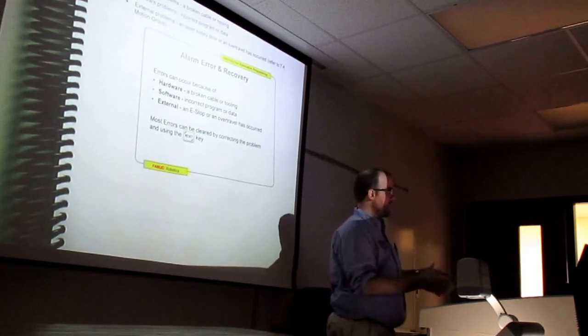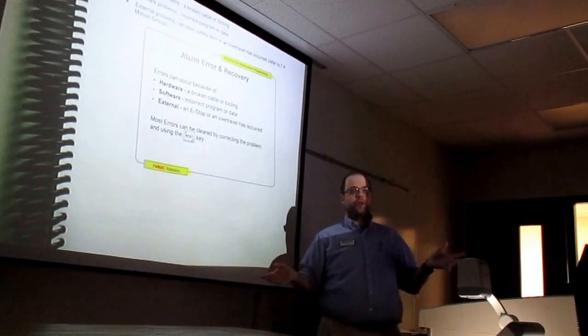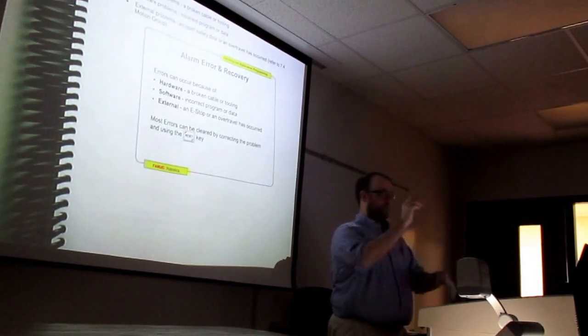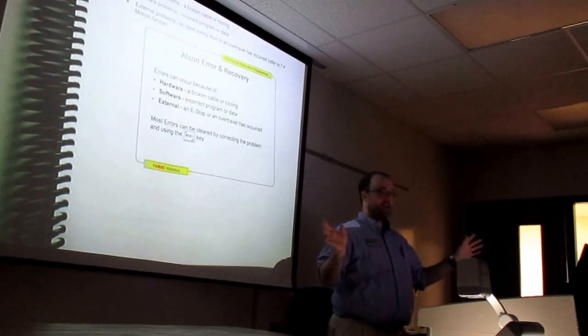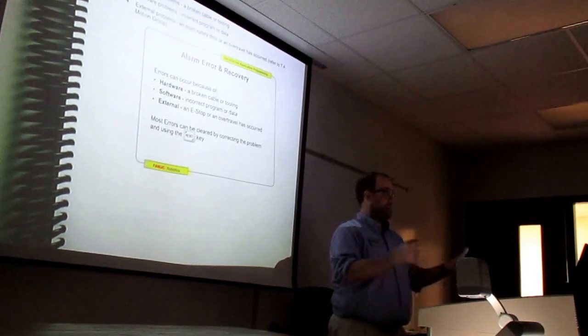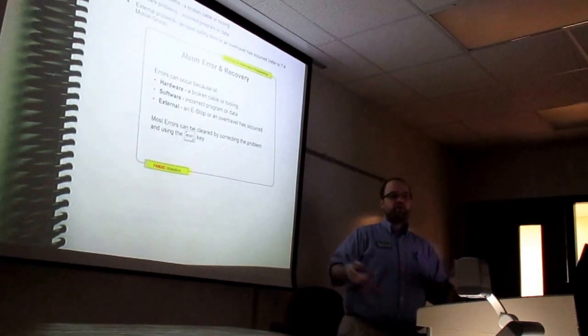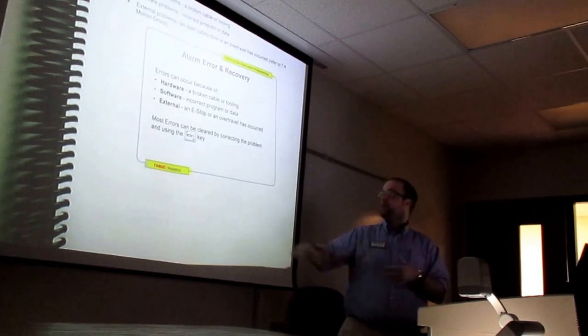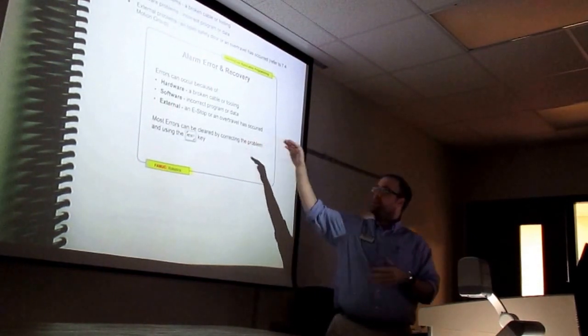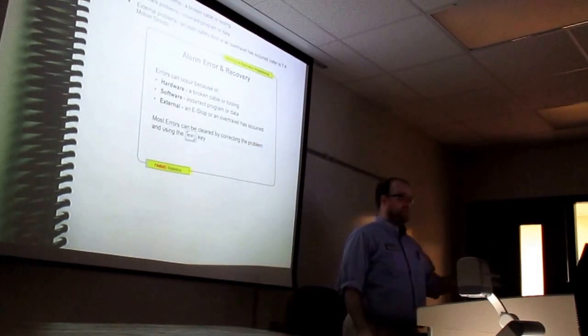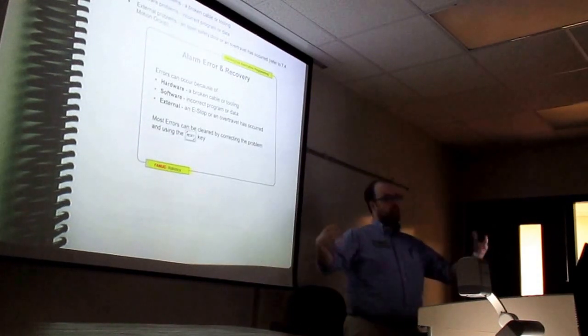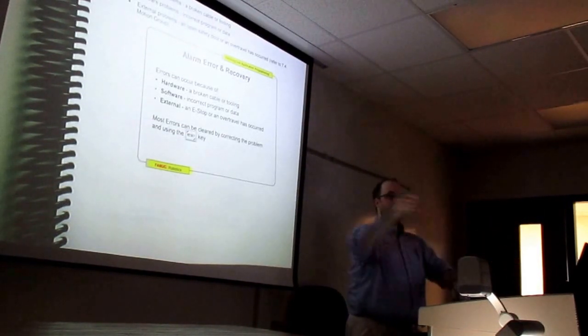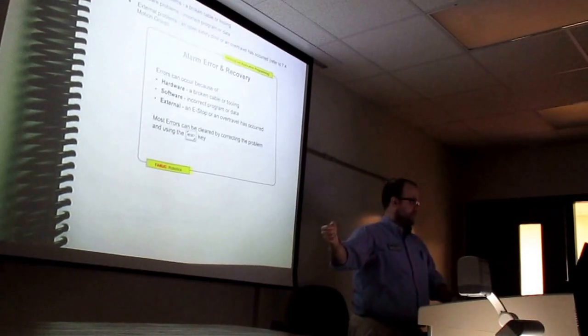Software issues. That's because of incorrect programming. Maybe someone came in on third shift and started mashing buttons and you know, kids they can do amazing things. They call 911 when the phone's locked. And then maybe they just did something, someone did something to mess up the program and you try to run a program and error happens. Some programs like when you make a circle or make an arc of some type if you don't program it right you're going to get a motion error. So sometimes the software is the issue.